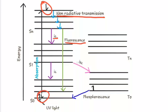Another way is inter-system crossing, where there is a transition between two iso-energetic vibrational levels having different spin multiplicities. The state during this transition is the triplet state, and when there is a transition from the triplet state to the singlet ground state, it creates phosphorescence. This is also a radiative relaxation.